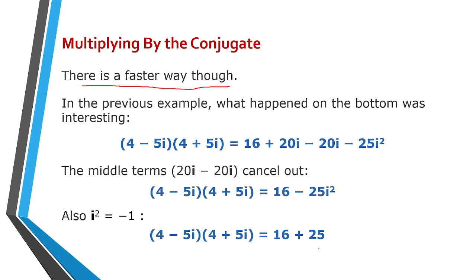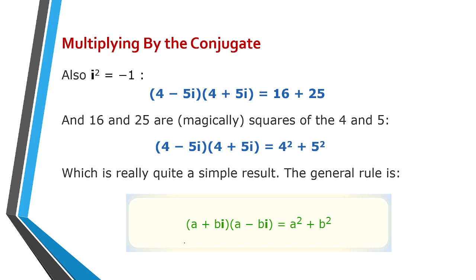Also, i² is -1, then (4-5i) times (4+5i) is 16 plus 25. And 16 and 25 are magically squares of 4 and 5. So the 4 and 5 are squared, which is really quite a simple result. So the general rule is: (a+bi) times (a-bi) equals a² plus b². So multiplying by the conjugate is equal to a² plus b², and the i disappears.